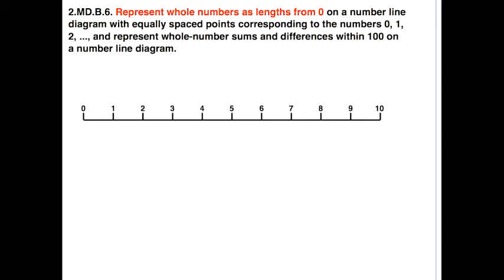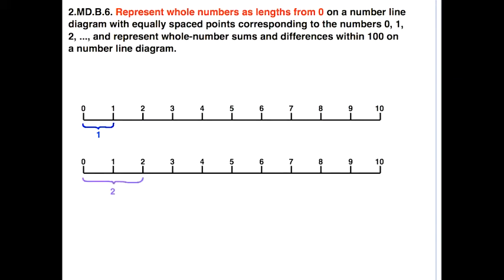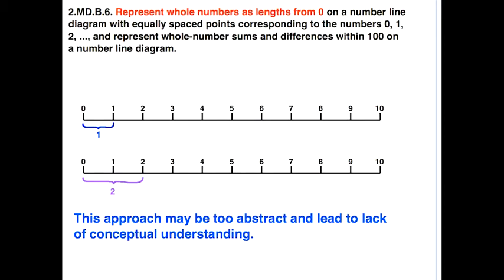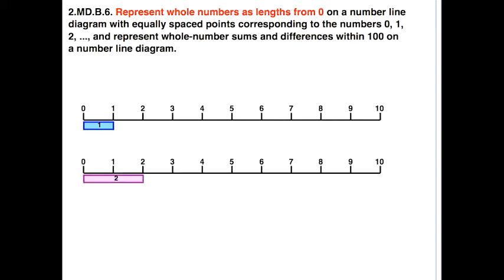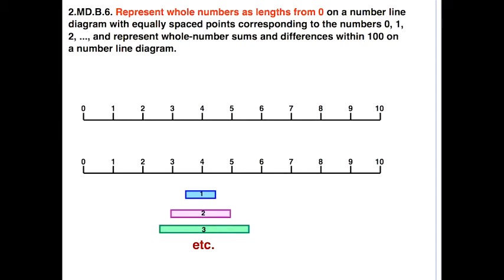Let's focus on representing whole numbers as lengths from zero. Typically we would show a distance of one, a distance of two — but this approach might be too abstract and lead to lack of conceptual understanding. A better approach at this grade level would be to use physical representations: number strips, where a distance of one looks like a strip of length one, a distance of two is a strip of length two, and so forth. It's a good idea to construct many copies of different length segments — lengths of one, two, three, and so forth.